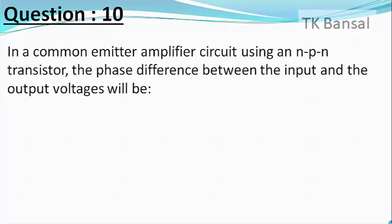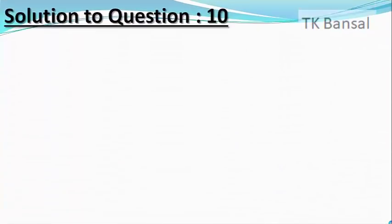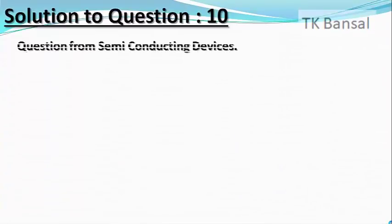In a common emitter amplifier circuit using an NPN transistor, the phase difference between the input and the output voltage will be? The choices are 135 degrees, 180 degrees, 45 degrees, and 90 degrees. This is a rather simple question from semiconducting devices.